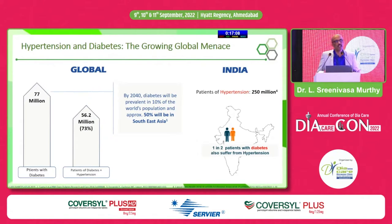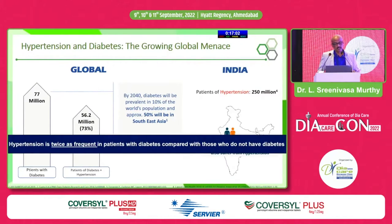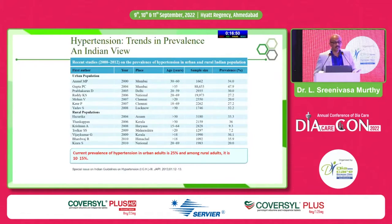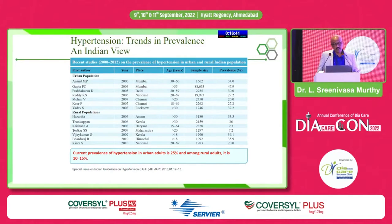In India, one in two patients with diabetes have hypertension — literally alternate patients have both conditions, which is our bread and butter. Hypertension is twice as frequent in patients with diabetes compared with those who do not have diabetes. Looking at Indian studies, prevalence boils down to 25% in urban areas and about 10–15% in rural areas — and the rural area is fast catching up.